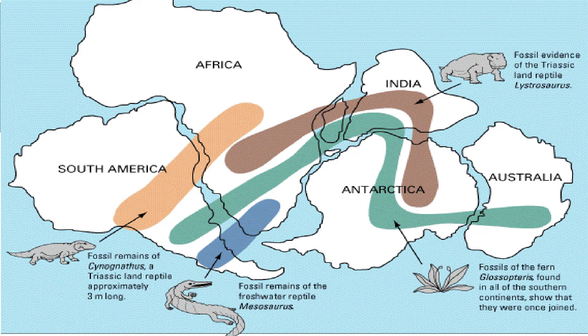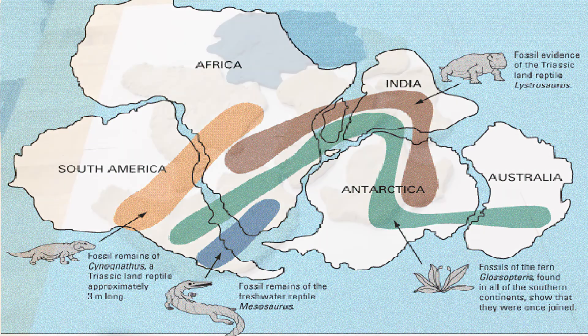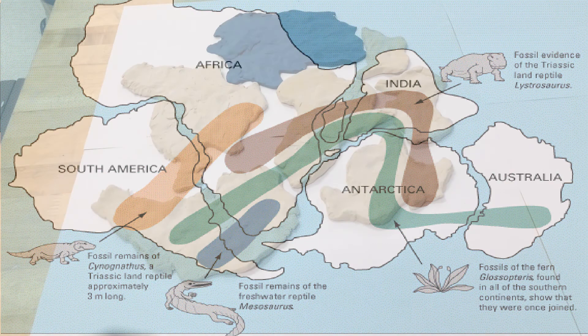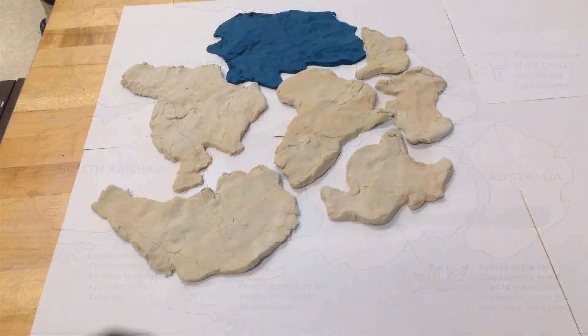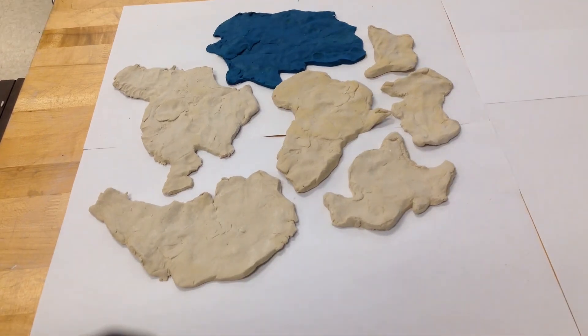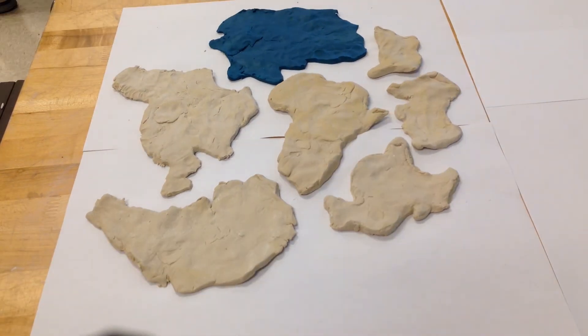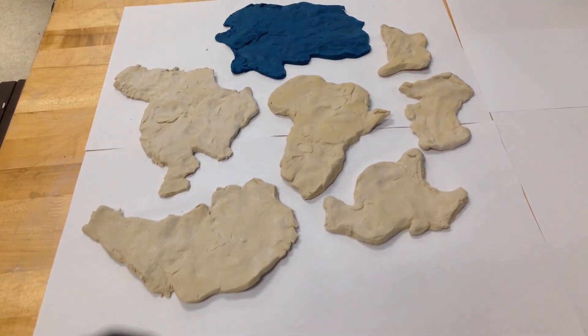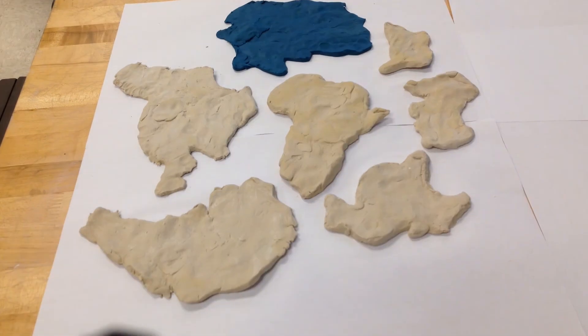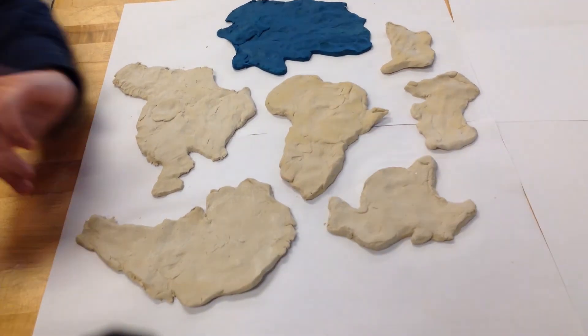In 1912, geophysicist Alfred Wegener proposed the Continental Drift Theory. Using his findings in continental fit, distribution of fossils, ancient climates, and exploring Earth's polar regions, he stated that the present-day continents were once the supercontinent Pangaea. Gradually, over time, the plate tectonics began to shift apart, and eventually Pangaea became seven pieces that formed their own present-day continents.